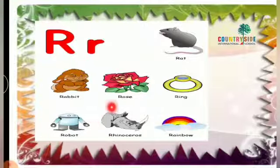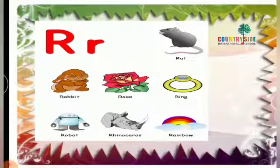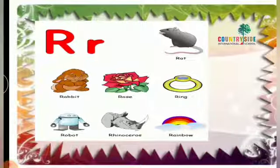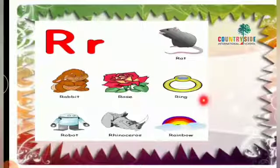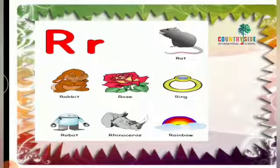R for rhinoceros. R for rambo. Rat, rabbit, rose, ring, robot, rhinoceros, rambo. These all words begin with the letter R.